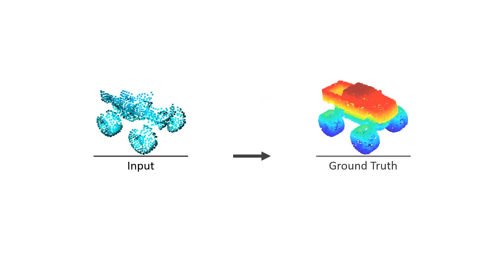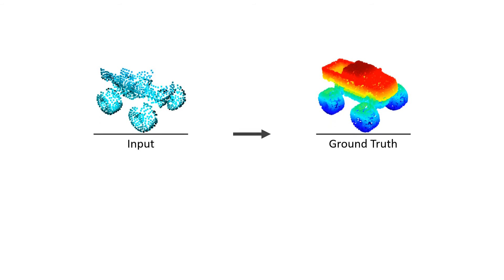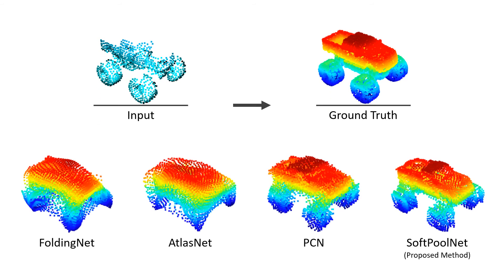Now let's see how it performs. The first example that we show is the monster truck, which is not a typical model in the car category. But even so, the proposed method reconstructs the wheel with good contours and a smooth body that is very close to the ground truth, while other methods that rely on PointNet mostly fail.